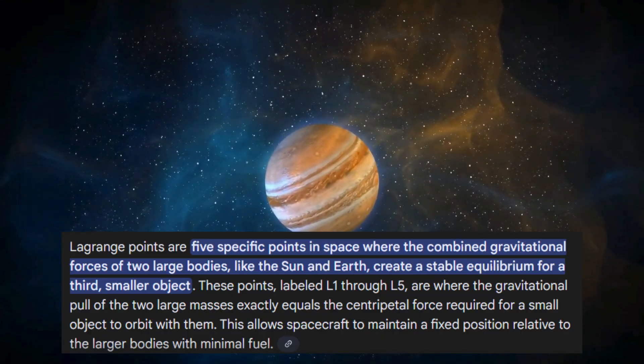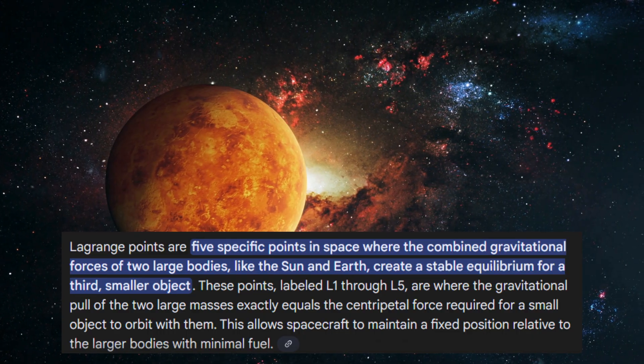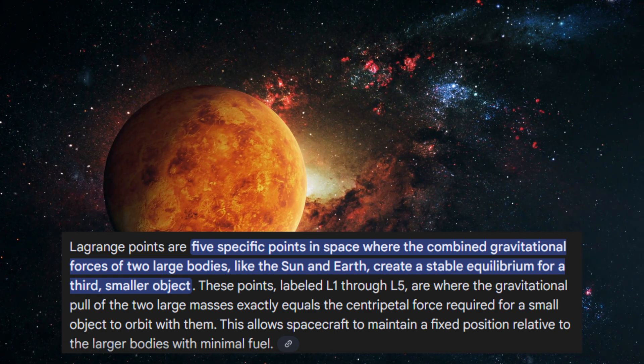At these points, the gravitational pull of two large bodies, like Jupiter and the Sun, can effectively cancel out, creating a stable region where spacecraft can park with almost no fuel use.